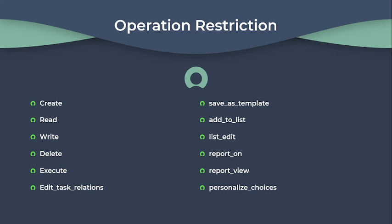ACL operations refers to the various actions or operations that can be controlled or restricted by ACL rules. These operations typically include: create, read, write, delete, execute, edit task relations, save as template, add to list, list edit, report on, report view, and personalize choices. Create enables the user to insert a new record into a table. Read enables users to display records from a table. Write enables users to update records in the table.